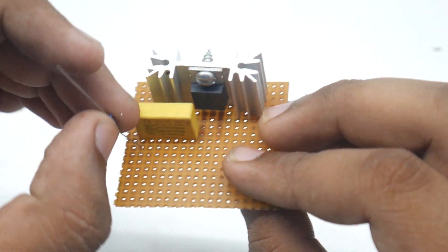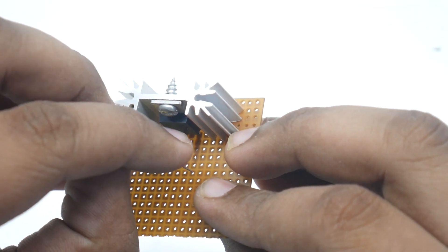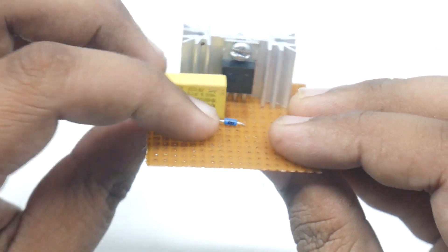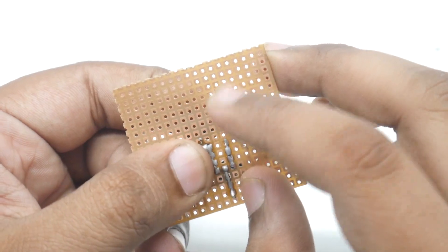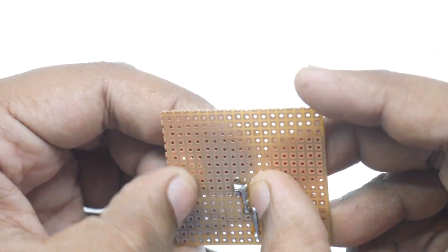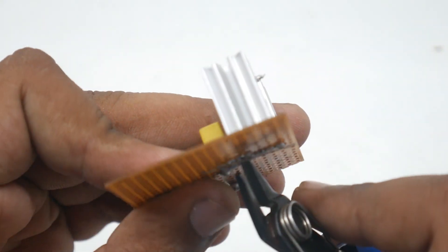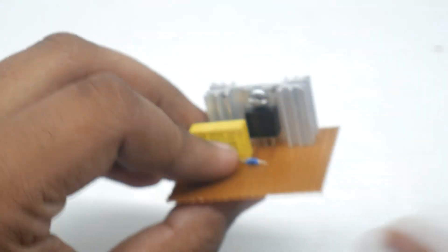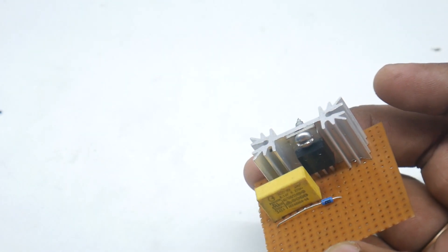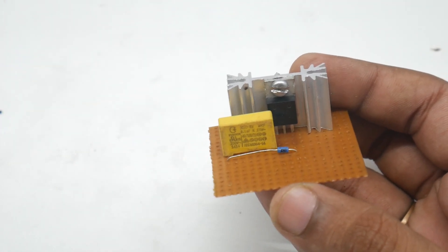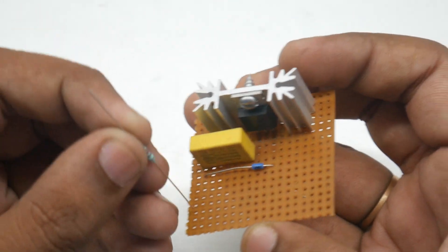And from the capacitor pin, from this end to our third pin of the triac, our DB3 diac will be connected like this. We have connected it.